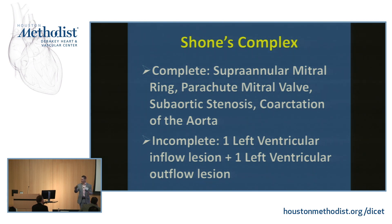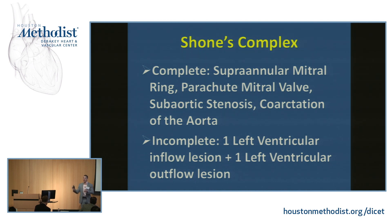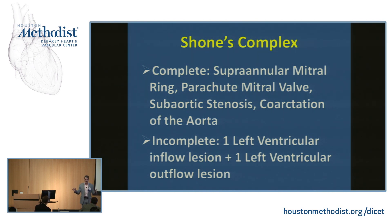The probability of you ever actually seeing a complete Shone complex is round about zero. In practice, people describe incomplete Shone complex, which is the coalescence of one LV inflow and one LV outflow lesion. And they don't have to be the inflow and outflow lesions originally described by Dr. Shone — it could include a cor triatriatum, other congenital forms of mitral stenosis, a bicuspid aortic valve, or a hypoplastic arch. The easiest way to think about it is as an incomplete hypoplastic left heart syndrome, where there's some restriction to inflow and some restriction to outflow.